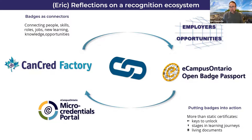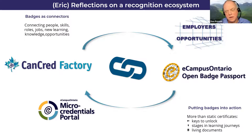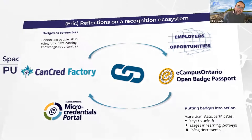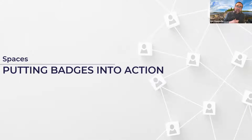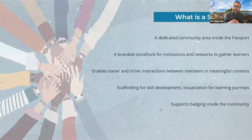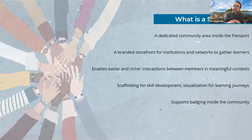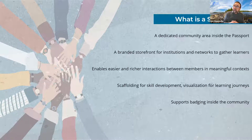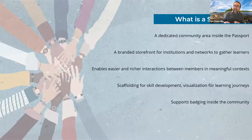In the passport, you now have the possibility to create spaces. Spaces are like passports inside passports. So inside eCampus Ontario, you could have different kinds of community spaces for the members of eCampus Ontario. The reason for spaces is that many of our customers say they'd like to have a clear view of their community — meaningful for users to be able to see the badges which have been issued by their organization. Spaces are basically community areas inside eCampus Ontario or inside a passport, dedicated for community members, that give the institution or organization the ability to manage what happens in that space.